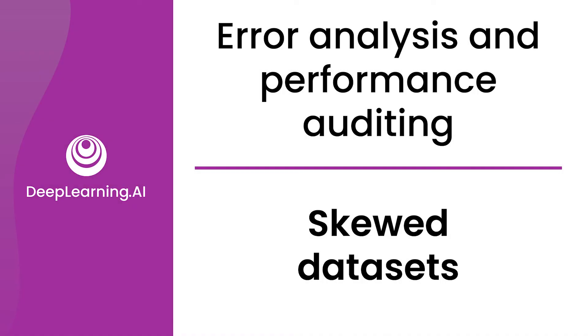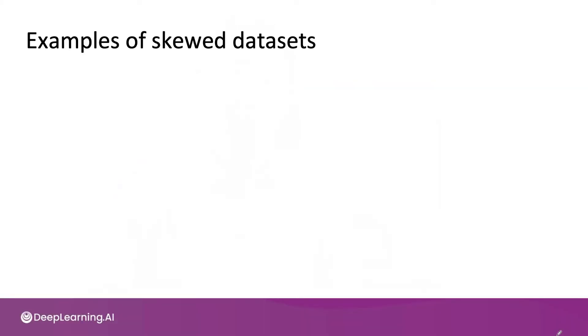Data sets where the ratio of positive to negative examples is very far from 50-50 are called skewed datasets. Let's look at some special techniques for handling them.